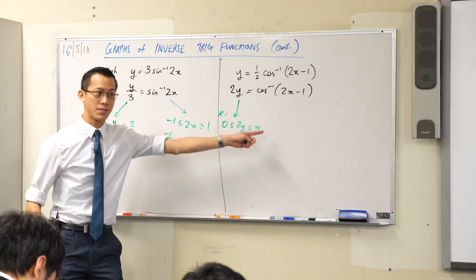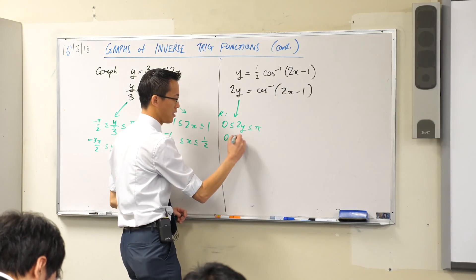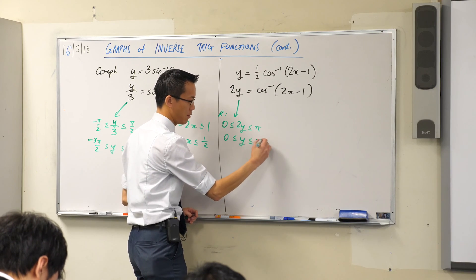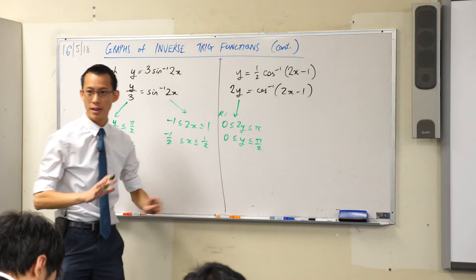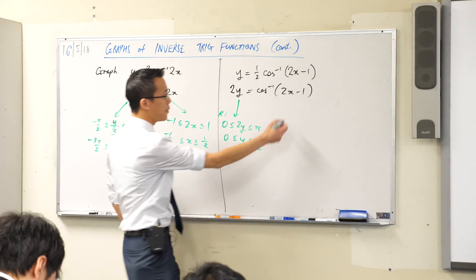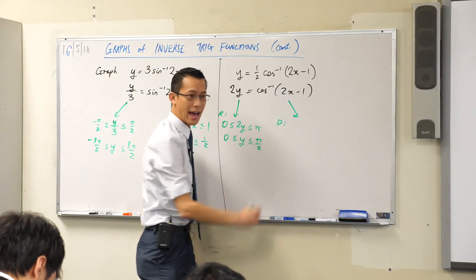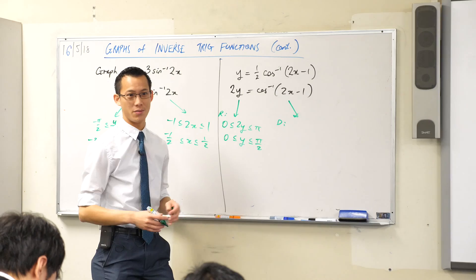To get the real range out of this, what shall I divide by? That's easy. Zero divided by 2, y divided by 2, y divided by 2, pi divided by 2. Happy times. But now have a look at the domain and how weird it is.